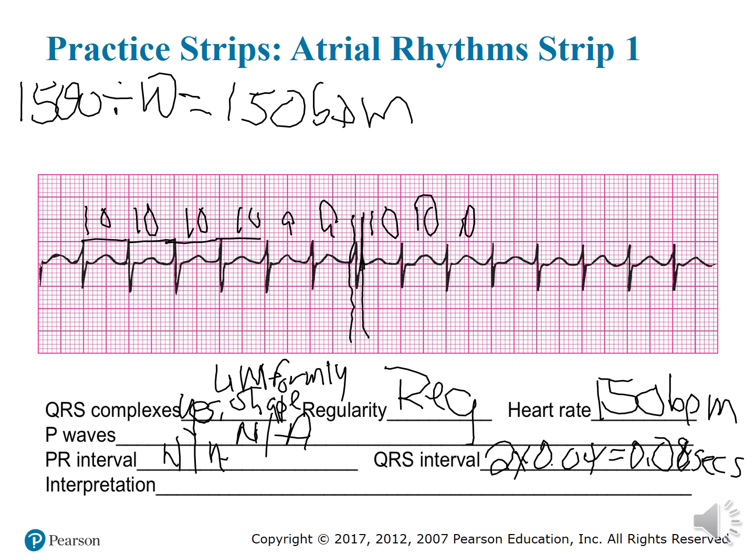Based on all the criteria we've learned for the atrial rhythms, which criteria fits this particular strip? Well, we know it's not AFib, not atrial flutter, not a PAC because it's not premature, and not a MAT or WAP because the heart rate is too high. So the only thing left is SVT.